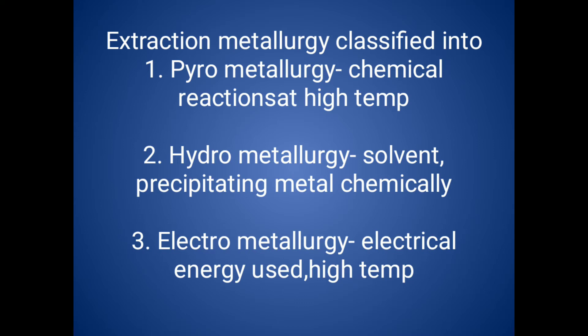There are three methods available for extraction in metallurgy: pyro metallurgy, hydrometallurgy, and electrometallurgy. In pyro metallurgy, we use high temperature and chemical reactions to get the pure metal — that is, to eliminate the gangue from the ore.